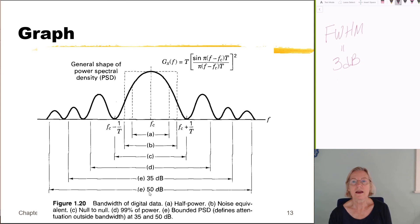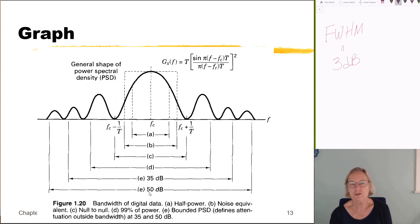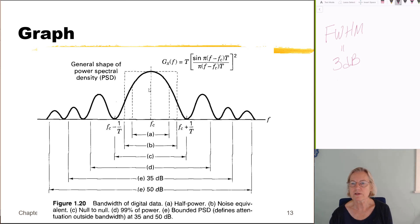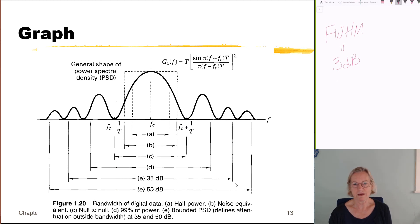This is completely normal — none of these definitions is more real than another; they're just useful in different ways. The illustrated bandwidths include: half-power, noise equivalent, null-to-null (main lobe), 99% power, 35 dB, and 50 dB. Each one is different and useful in its own way.